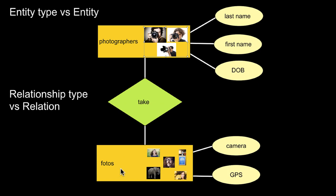The same applies for photos. Here you have five photos in that entity set photos. There's this principle relationship type between those two entity types, but I didn't put any relationship instances here — we'll talk about that later on.